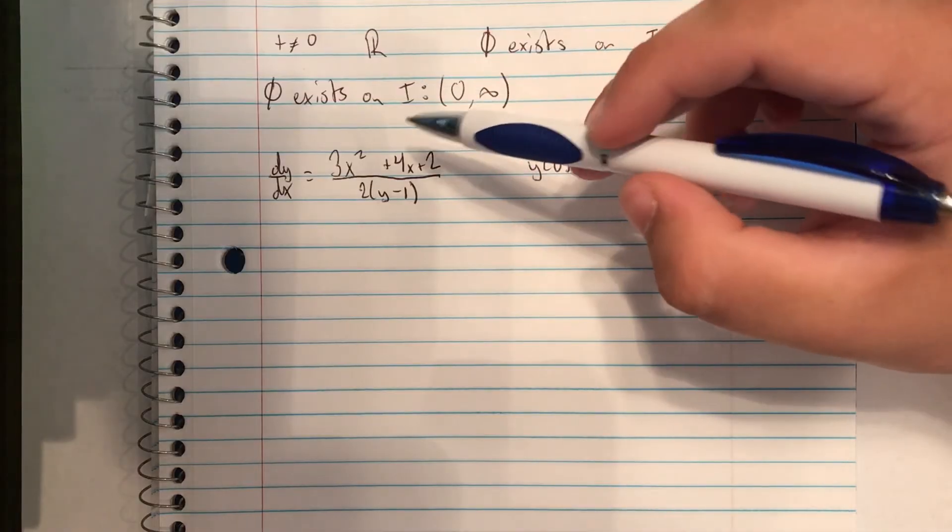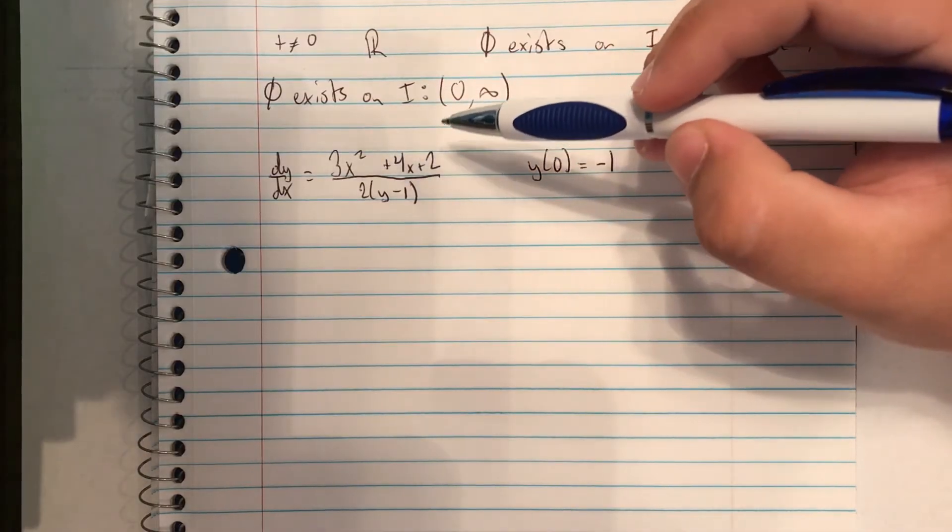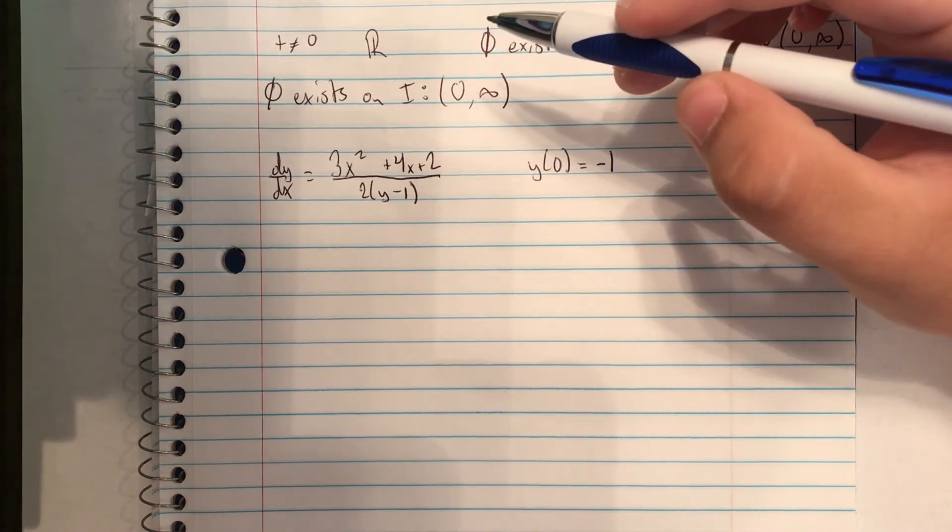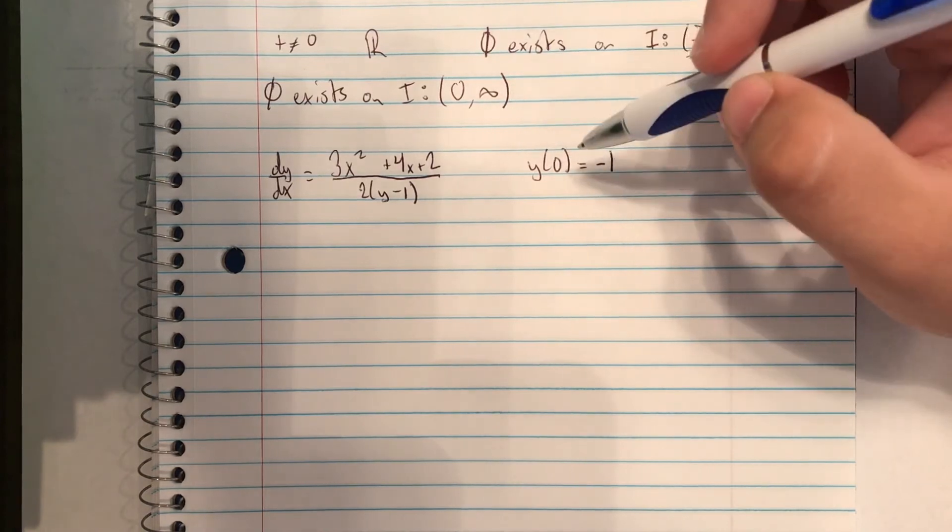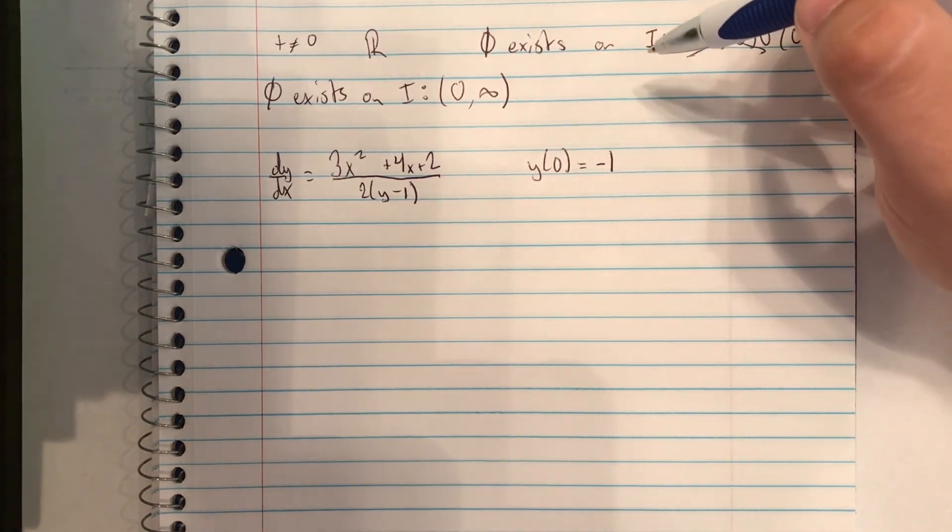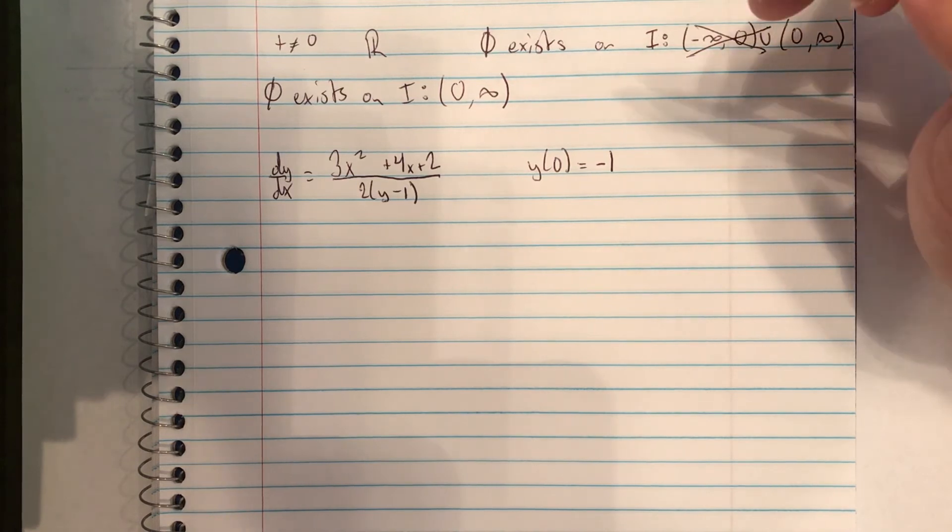The next problem we have is dy/dx = (3x² + 4x + 2)/(2(y - 1)). We also have the initial condition y(0) = -1. So we're going to use theorem 2.4.2.